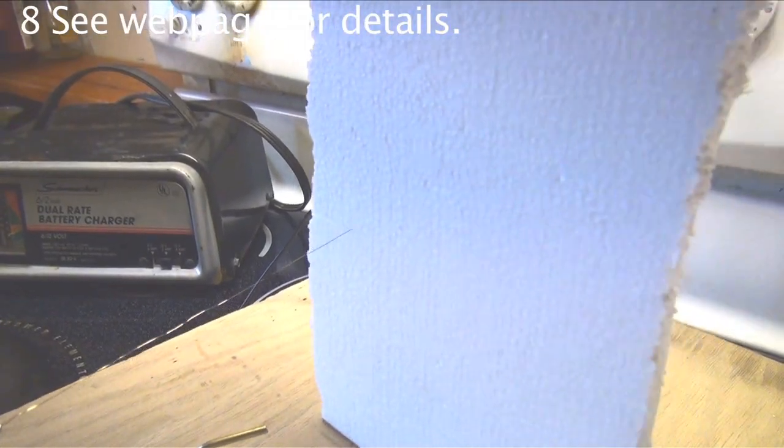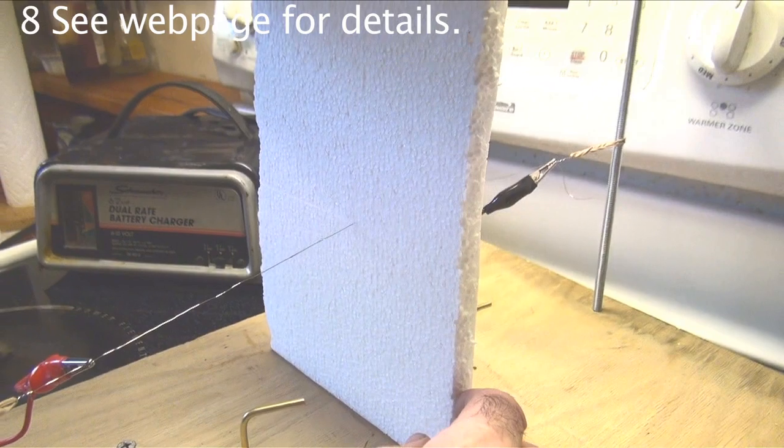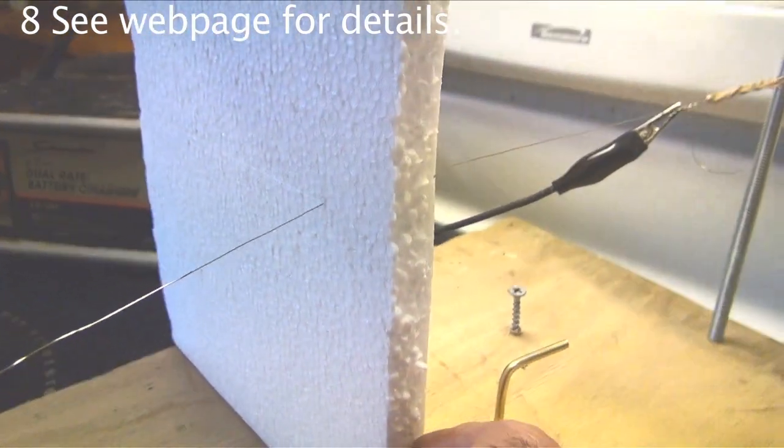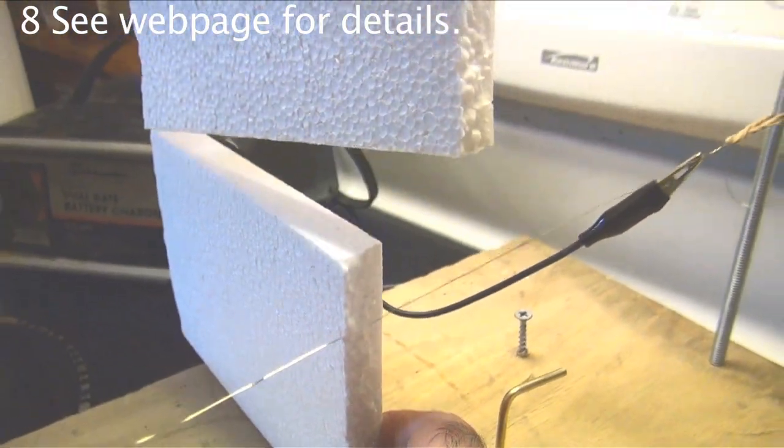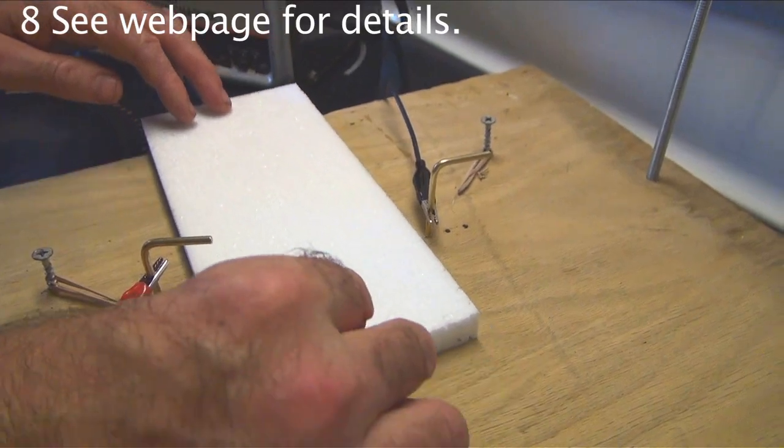The Sciencetoymaker kit allows you to heat nichrome wire, the same kind of wire that you see in a toaster, both to rough cut blocks of recycled foam and then slice very precise sheets.